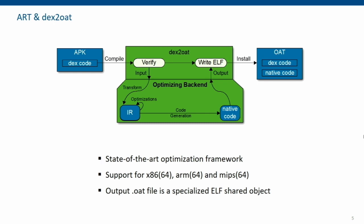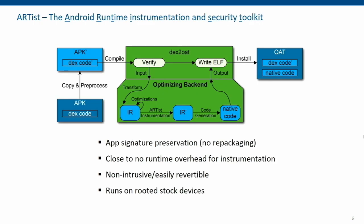We took Dex2Oat as a base and created ARTIS on top of it, adding two different parts. First, we added a preprocessing step: since the signature is verified before optimization, we work with a copy of the original APK and can merge any bytecode we want into it. So assuming we have an instrumentation module with its own logic — a Java library with business logic — this is merged in the first step. The whole code is then transformed to the intermediate representation, giving us the IR of both the original app's code and our injected code.